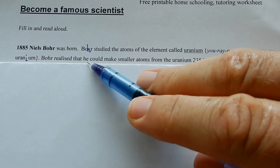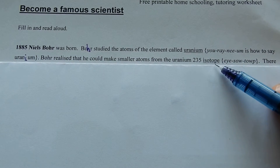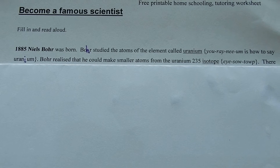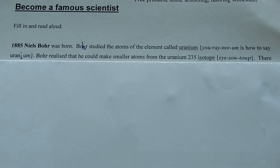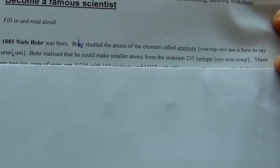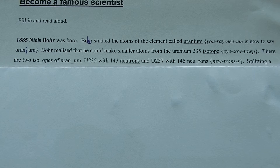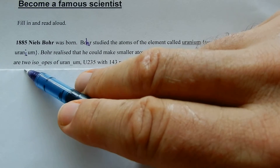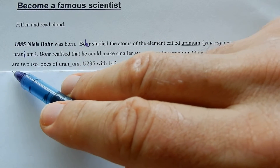Bohr realized that he could make small atoms from the uranium-235 isotope. There are several different types of uranium and they are called isotopes, having more or less neutrons in them. You can vary the neutrons but the protons have to stay the same — it has to be 92 protons for it to be uranium, but neutrons can change.